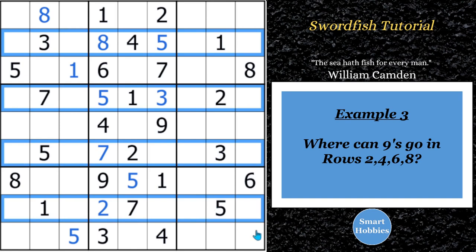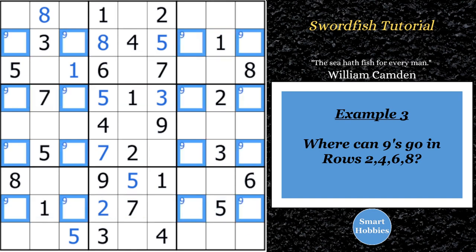All right. You may notice that the nines could go in four places in rows two, four, six, and eight. You might also notice it's the same four columns. Columns one, three, seven, and nine. Okay, I talked about swordfish. I talked about three by three. What is this?